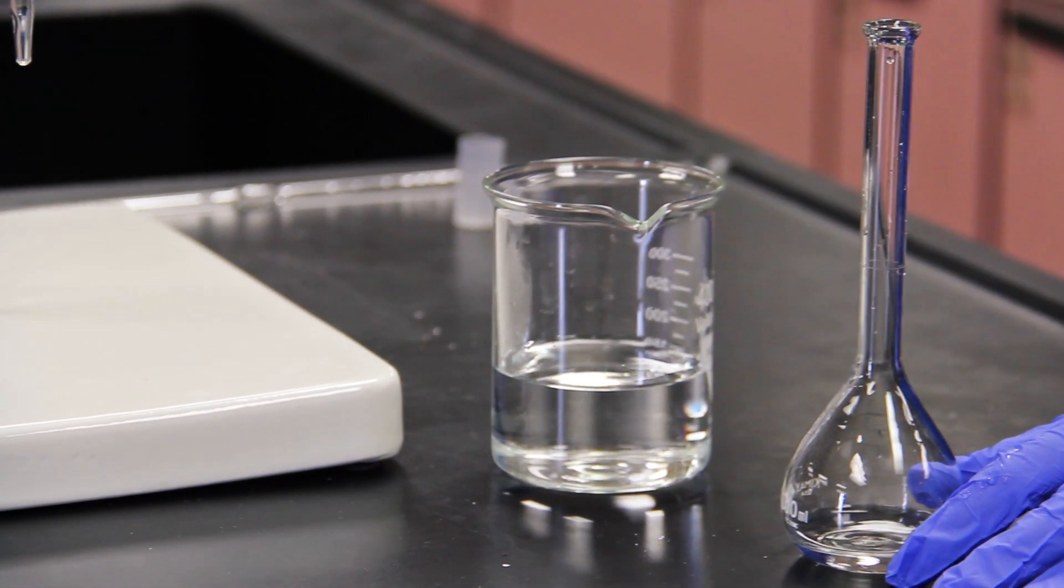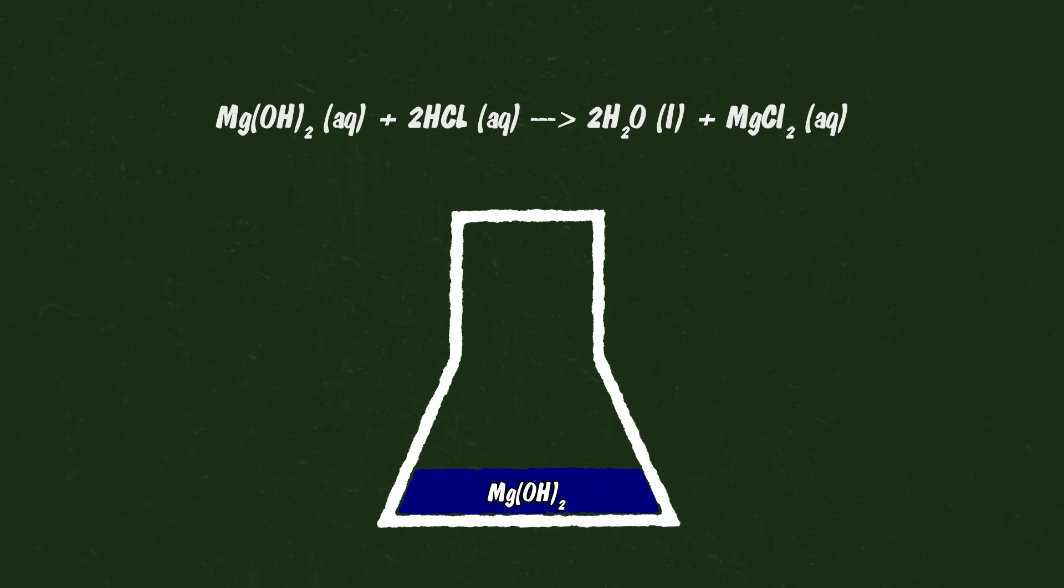The key component of this analysis is knowledge of the chemical reaction that will take place between the standard and the analyte. One mole of magnesium hydroxide, a strong base, reacts completely with two moles of hydrochloric acid, a strong acid.